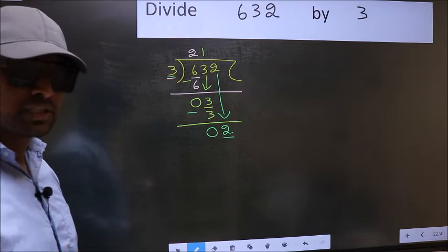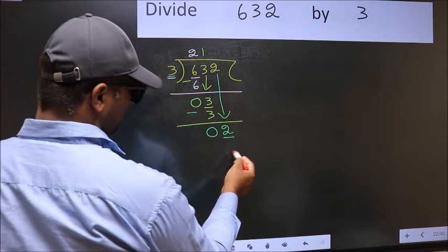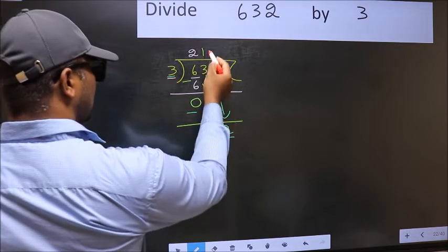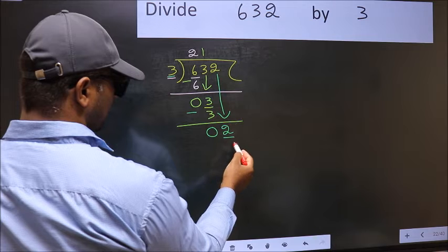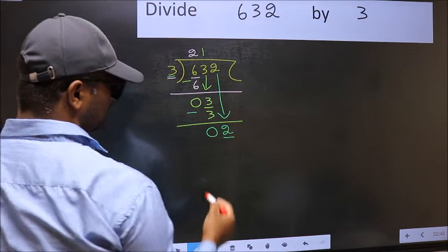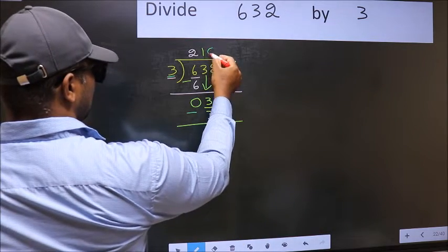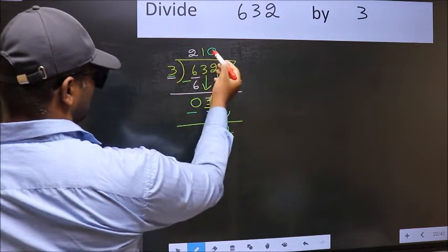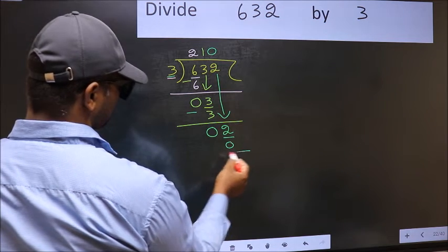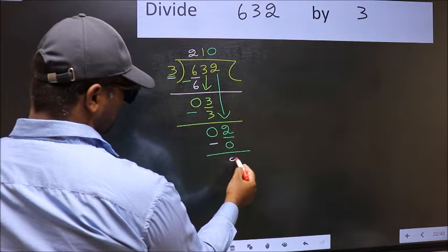Instead, what you should think of doing is, what number should we write here? If I take 1 here, I will get 3. But 3 is larger than 2. So what we should do is we should take 0. So 3 into 0, 0. Now you subtract. 2 minus 0, 2.